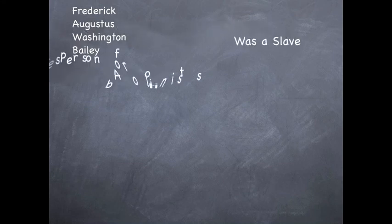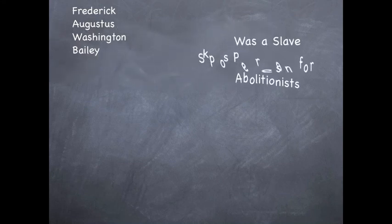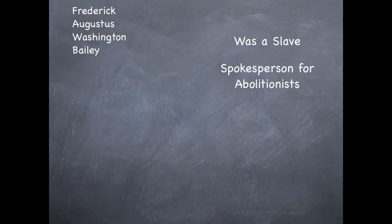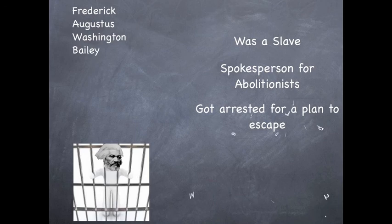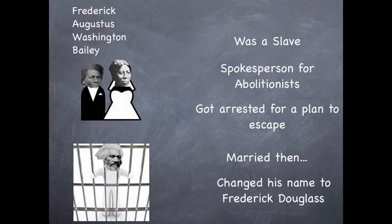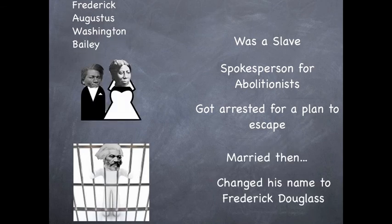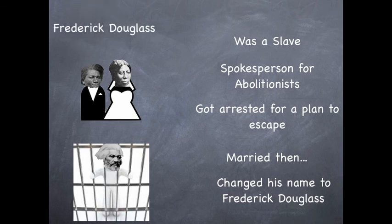Frederick Augustus Washington Bailey was a slave, spokesperson for the abolitionists, got arrested for a plan to escape from slavery, married, then changed his name to Frederick Douglass as we all know him. Abolitionists are part of conflict because they were causing some problems.